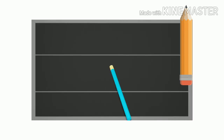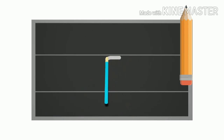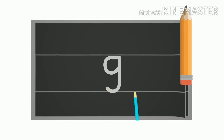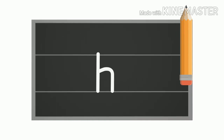Small g: start from the middle and make a small c, then go to the middle and draw a standing line going down below the bottom with a small backward curl. This is your small g.